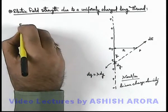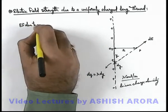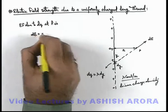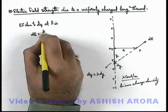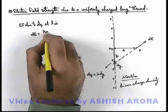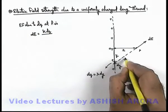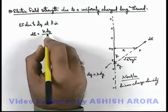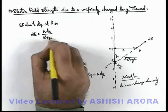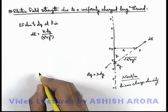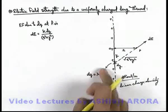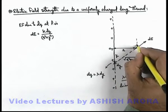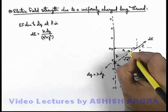We can write the electric field due to dq at P as dE, given by the result for a point charge: dE equals k·dq divided by (r² + y²). Now if we integrate this from one end of the thread to the other, the direction of dE will change.